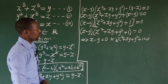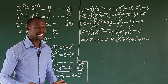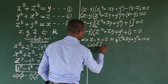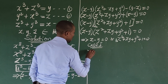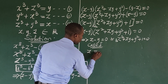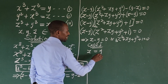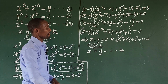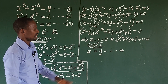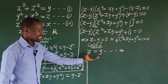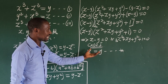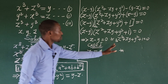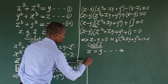Case one gives us z − y = 0, which means z = y. We'll call this equation star. This equation is going to play a very vital role in solving this challenge.